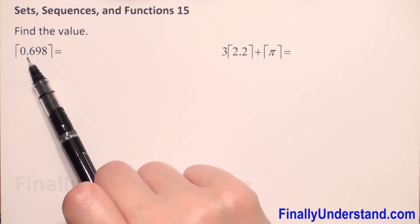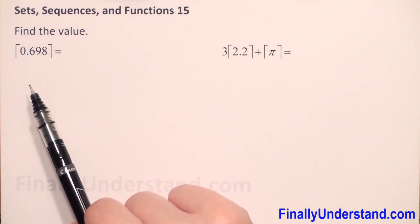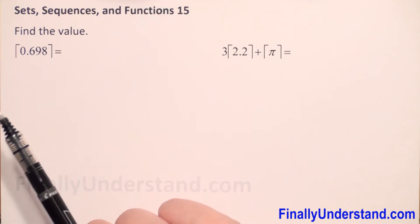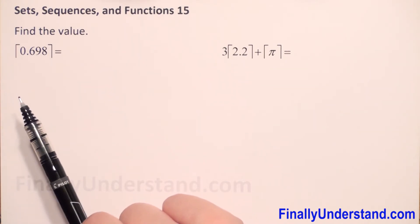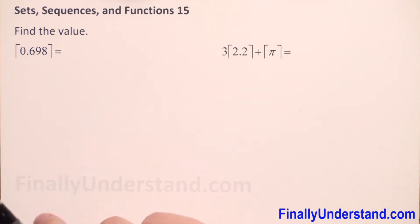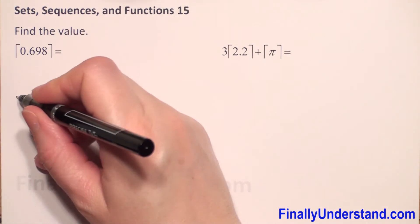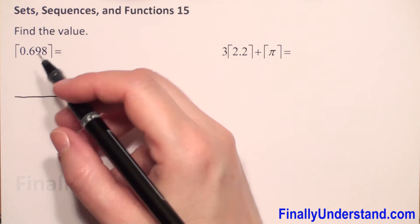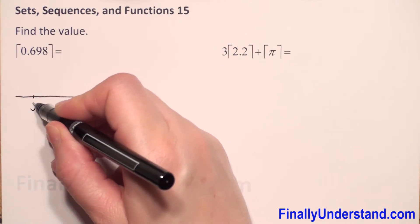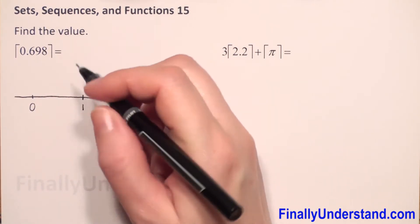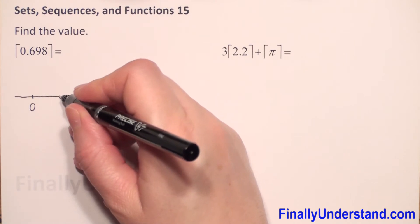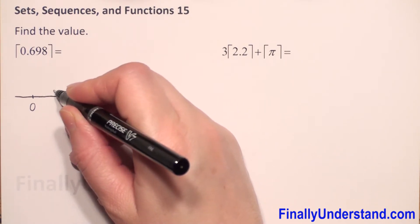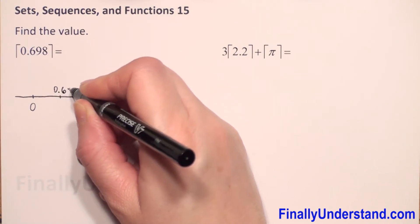Because this number isn't integer, because we know that integers are the whole numbers including 0 and negative values. So, first we will draw a number line. This number is between 0 and 1. We have 0.698.